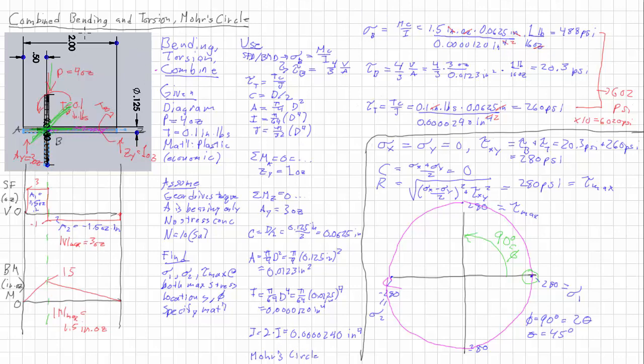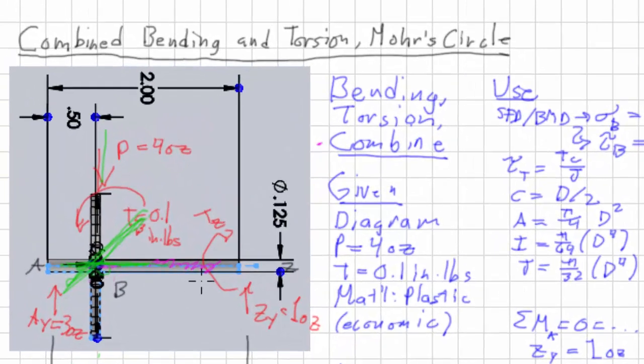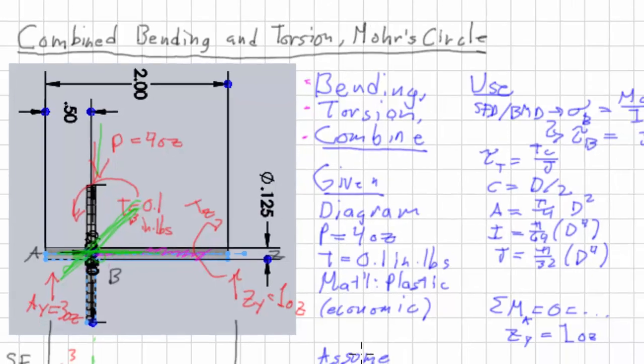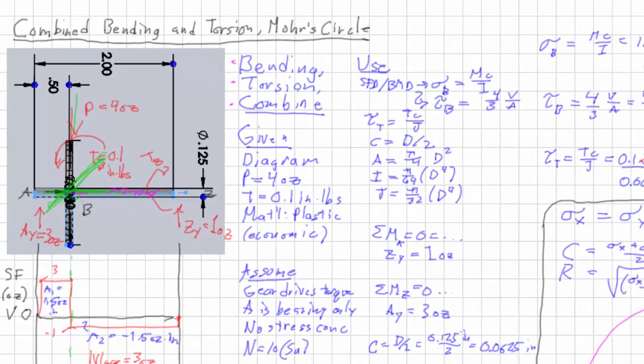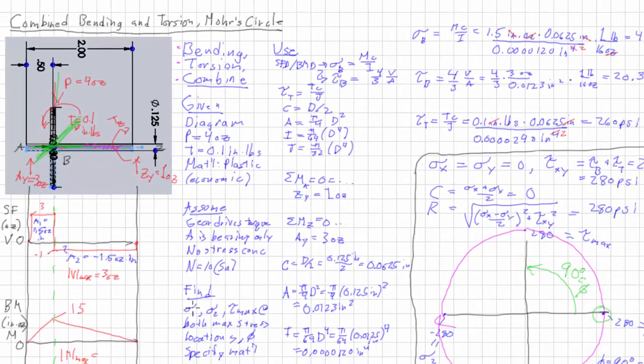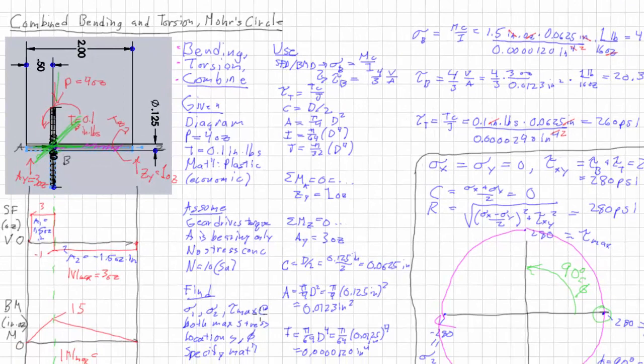In review, we were given the task of finding the stresses on a plastic gear shaft. And we decided on a strategy of analyzing bending and torsion and then combining them. So we were given the diagram, the loading, some reasonable assumptions, and decided that we needed to find the principal stresses, the maximum shear stress. And that's for both types of loading, bending and torsion. Finding their locations, finding the angles, and then finally specify an appropriate material.